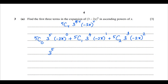For the second term, 5C1 is 5, multiplied by 3^4 and (-2), so the sign is negative: giving -5 × 3^4 × 2x. For the third term, 5C2 is 10, so we get minus 10 × 3^3 × 2² × x².